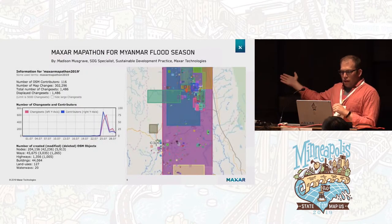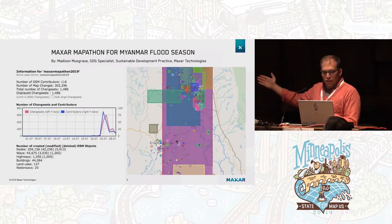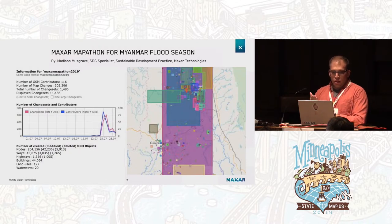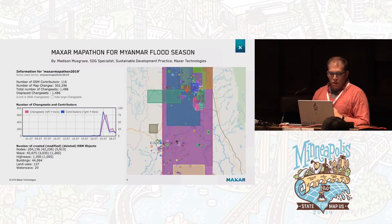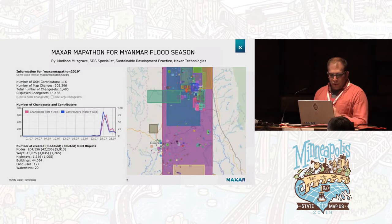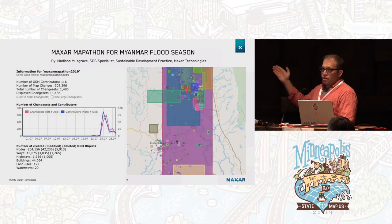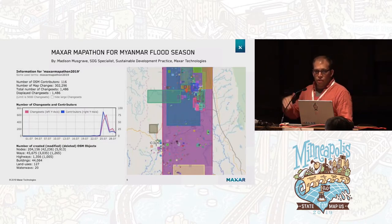As for our results — Madison, who's in the audience, wrote a blog post about what we did. On the left-hand side, we had 116 contributors, resulting in over 300,000 changes and 1,500 changesets. We created over 200,000 nodes, over 45,000 ways, including about 1,500 highways and 44,000 buildings — all over the course of just a few days. Of those 116 contributors, about 80 were first-time OSM users.